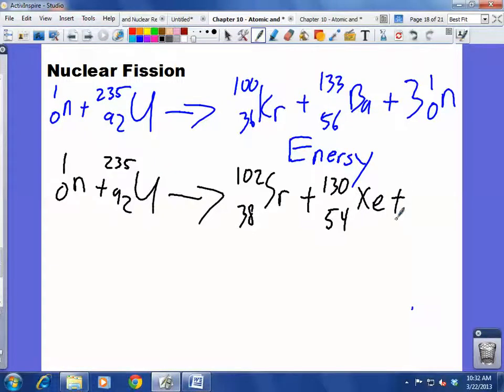How many neutrons am I missing here? Four. Four. My atomic number is still the same. But my mass number is off by four. And so each of those neutrons just has a mass number of one, and no atomic number. So this time I'm missing four neutrons.